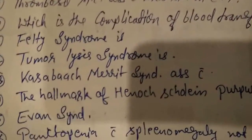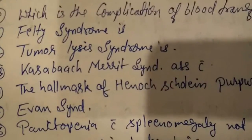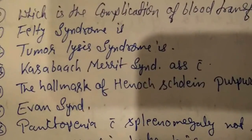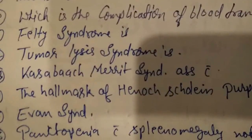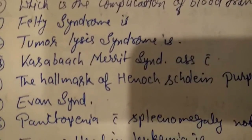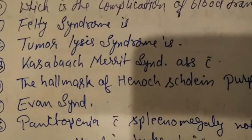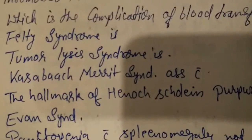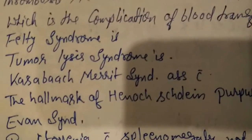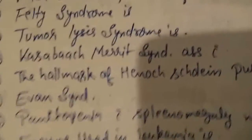Twelfth question: tumor lysis syndrome — we see hyperkalemia and hypocalcemia in tumor lysis syndrome. Thirteenth question: Kasabach-Merritt syndrome is associated with giant hemangioma — G-I-A-N-T hemangioma.